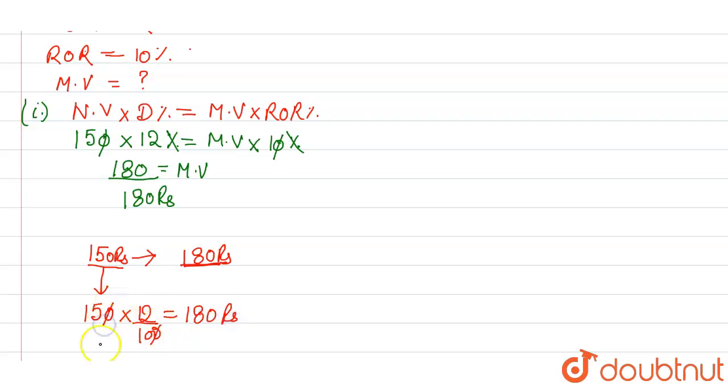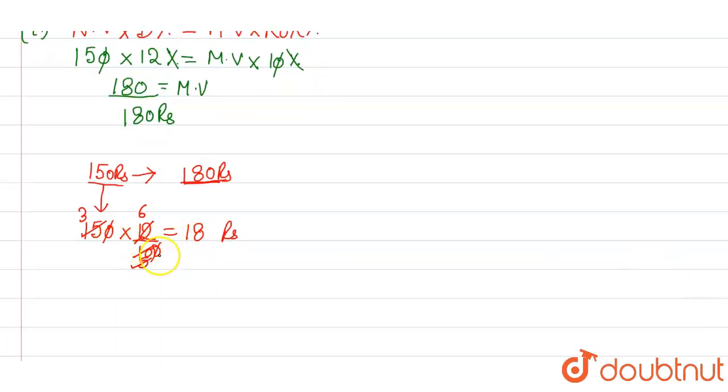Now calculating the dividend: 150 times 12% equals 18 rupees. So the dividend will be equal to 18 rupees for a share whose cost is 180 rupees. So we can say 18 rupees dividend is earned when we invest 180 rupees.